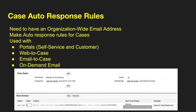In the automation available, we have case auto-response rules and an organization-wide email address. You can make auto-response rules for cases — they can be used with portals, web to case, email to case, and on-demand email. You can use case auto-response rules to send an email back to the person who submitted the case, provided that the email address was provided.